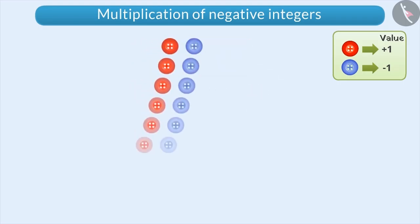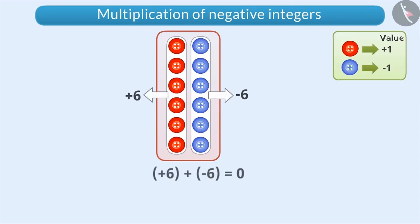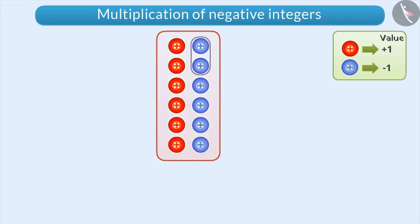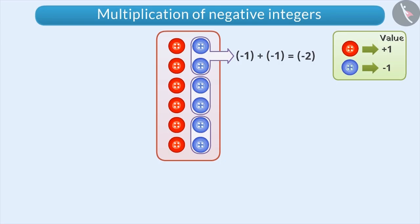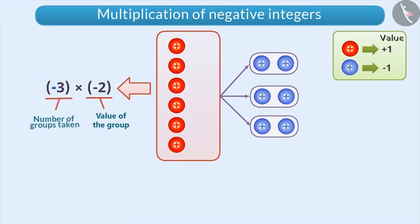First, we take six red and six blue buttons and make six groups out of them. Since the red and blue buttons are equal in number, the value of these six groups will be zero. Now, let's make a group of two blue buttons and make three such groups. The sum of minus 1 and minus 1 will be minus 2. If we take out three groups having two blue buttons whose value is minus 2, then we will express it as minus 3 into minus 2. Here, the second number represents the value of the group and the first number including the minus sign represents the number of groups taken out.